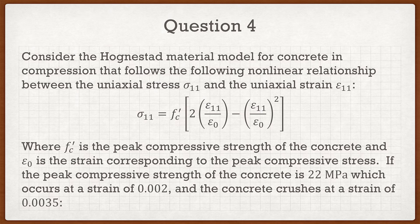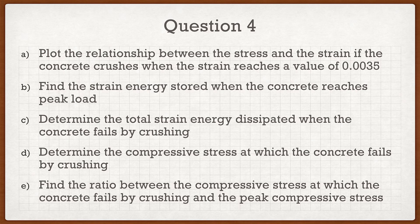So if we go to the lab, take a concrete cylinder and crush it, the stress goes up until it peaks. At this peak, the corresponding stress is f'c, and the strain at f'c is epsilon_0. The problem states the peak compressive stress is 22 MPa, occurring at a strain of 0.002, so f'c is 22 MPa and epsilon_0 is 0.002. The concrete crushes at a strain of 0.0035, and we need to determine five different things.